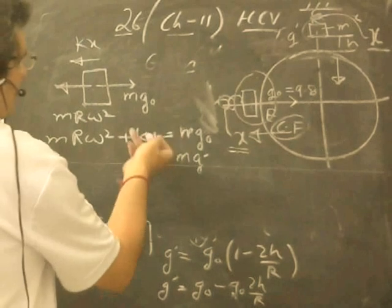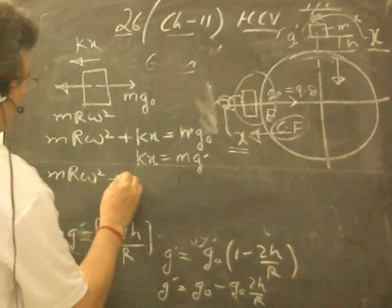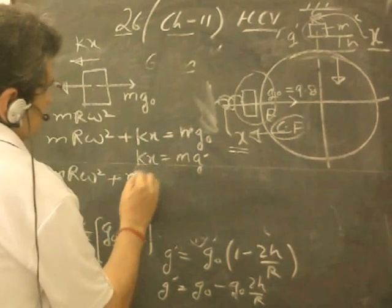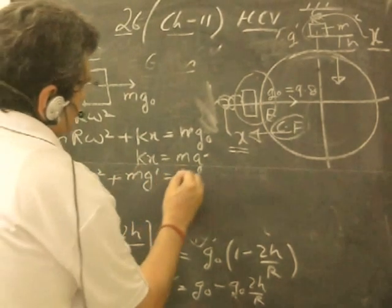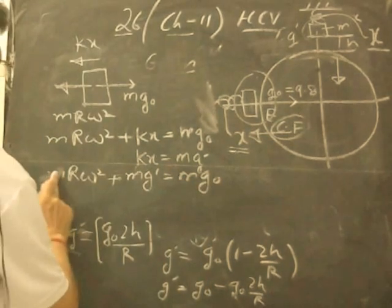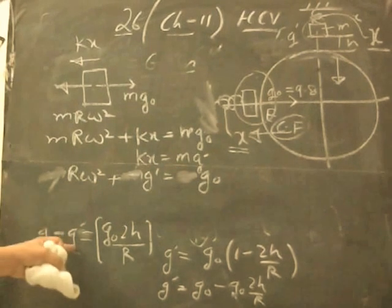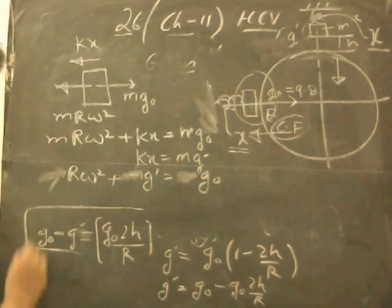So place the value of kx here. It becomes mRω² + mg' = mg₀. m gets cancelled and it becomes g₀ - g'.